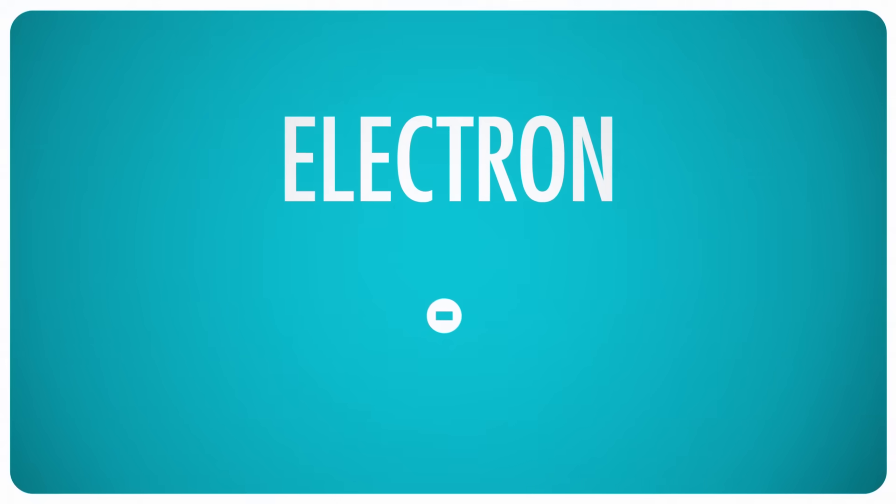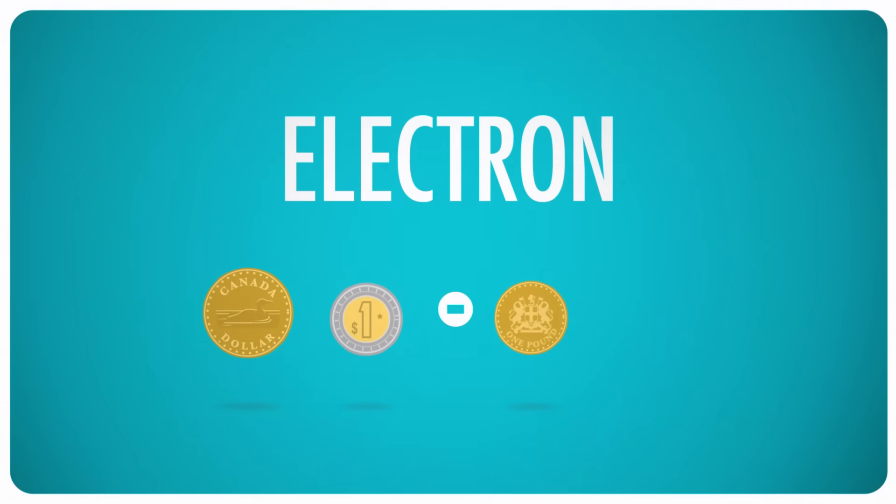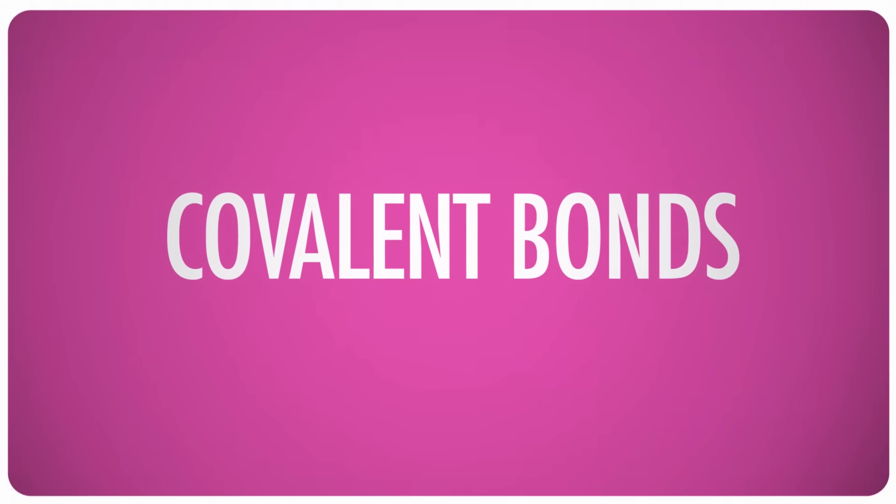Since electron swapping is the name of the game here, when you study redox reactions, it's important, critical, absolutely essential, to keep track of the electrons. Think of them as dollars or pesos or pounds or euros. In any transaction, one person is going to gain them and the other is going to lose them. And to stay on top of things, you have to keep tabs on who's ahead and who's behind. Atoms are fond of sharing electrons, forming covalent bonds, so sometimes keeping track of where they are and where they're gonna end up isn't quite so simple.